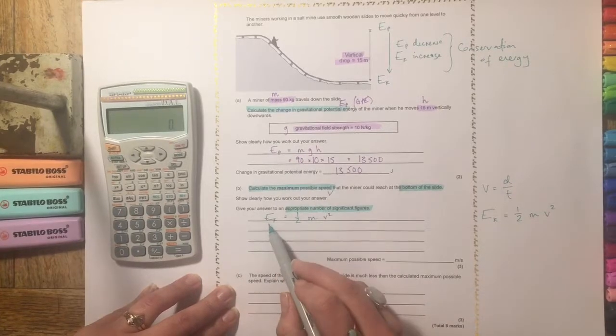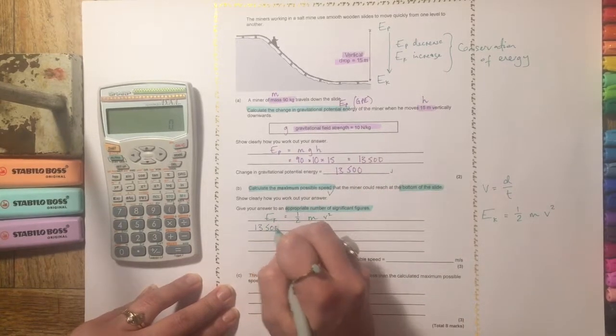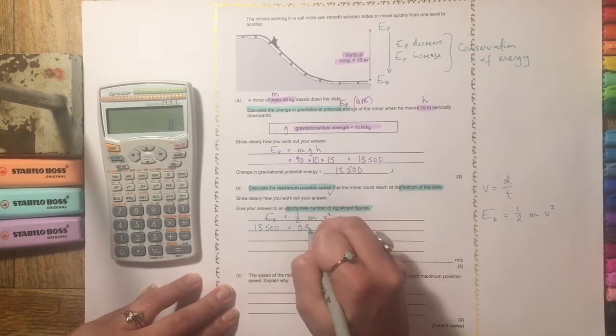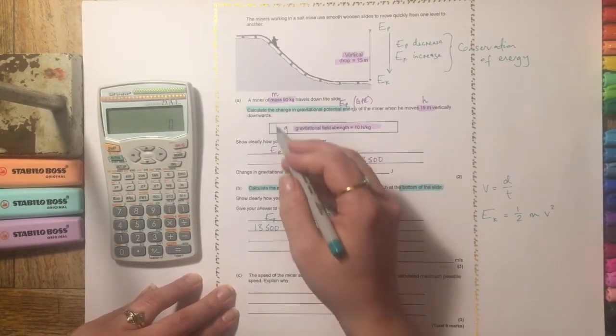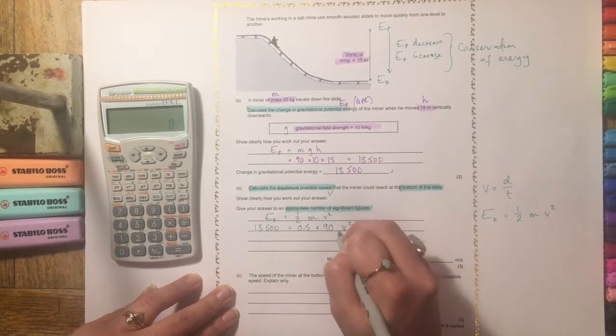So if we write out our equation, Ek equals a half mv squared, and then do the same as we've done up here. So underneath Ek we want to write 13,500. A half is just 0.5. We know that the mass is 90. And then we know that it's v squared.